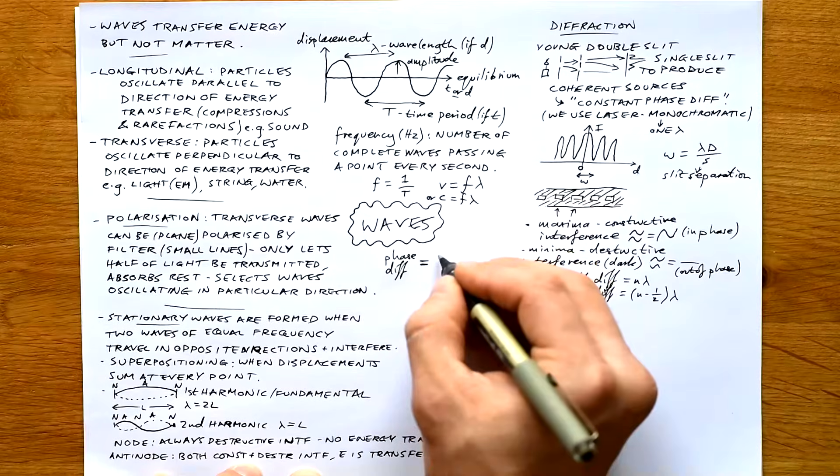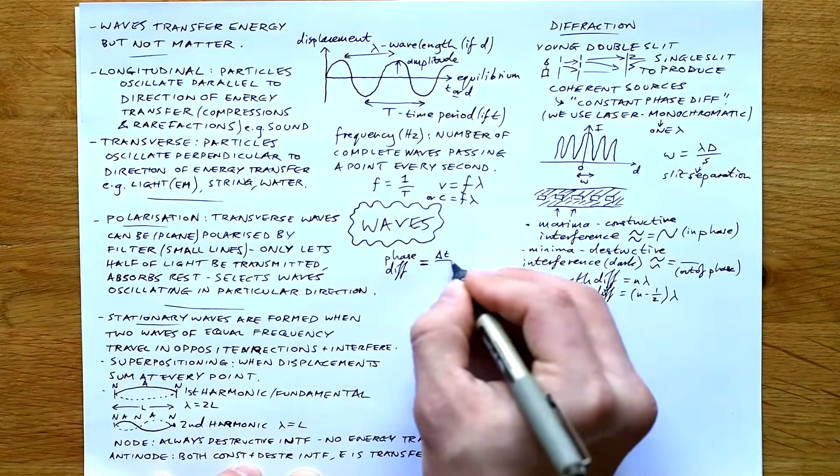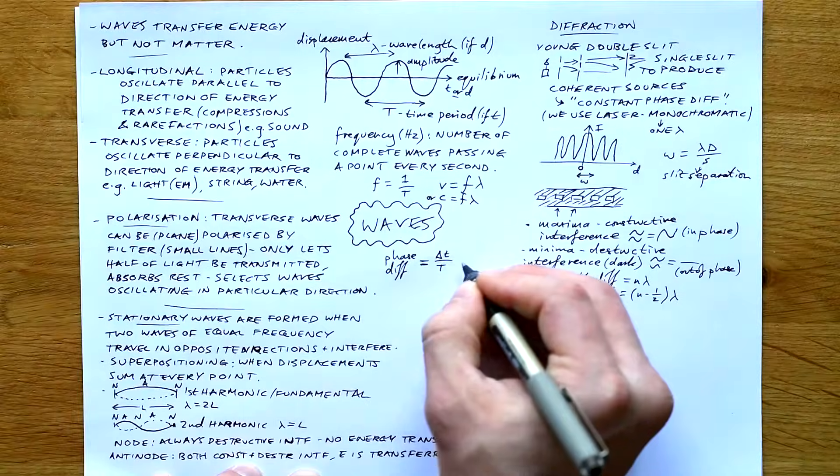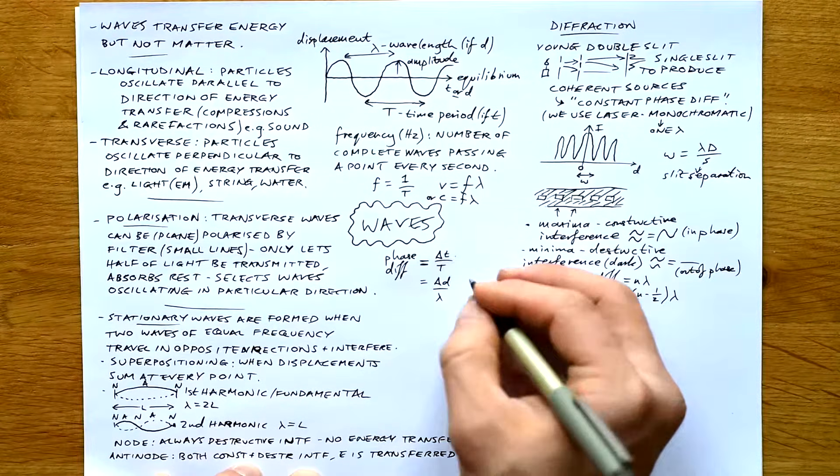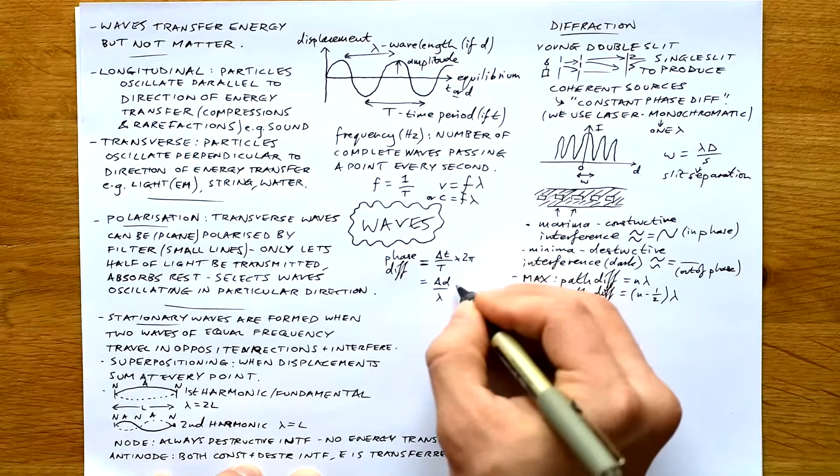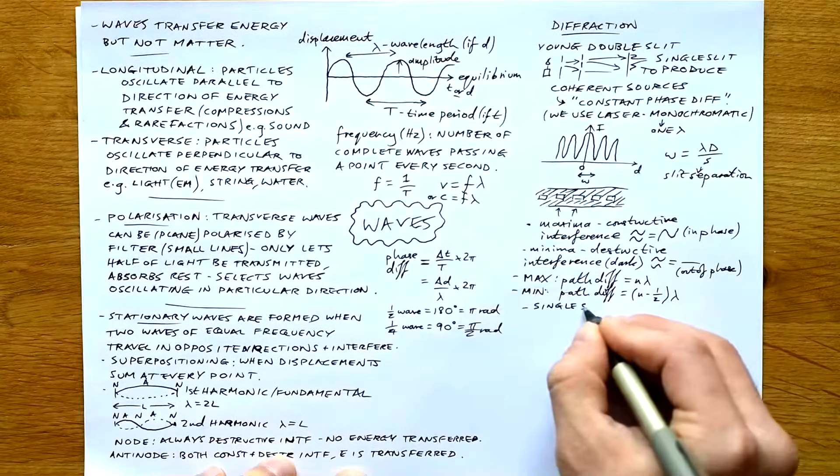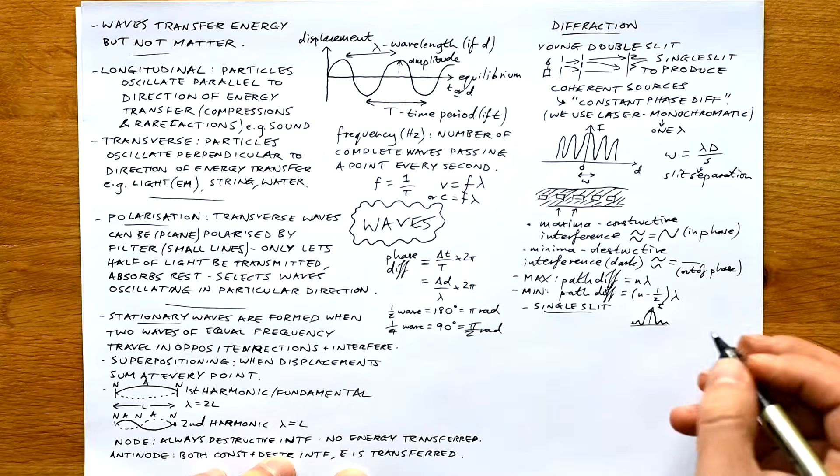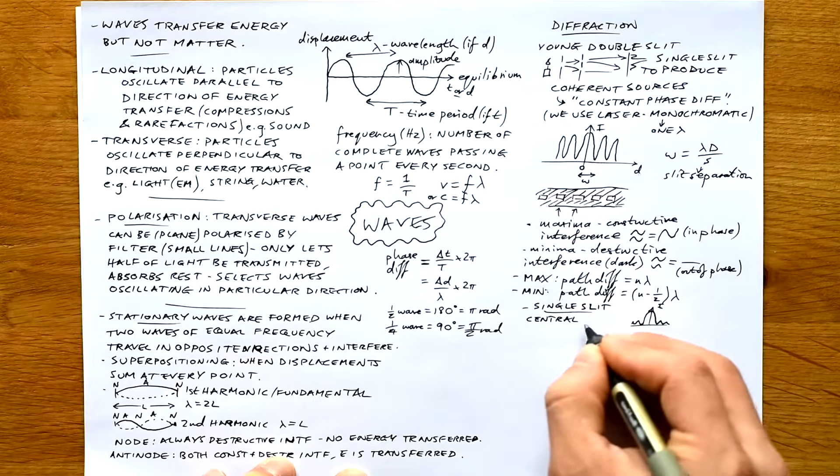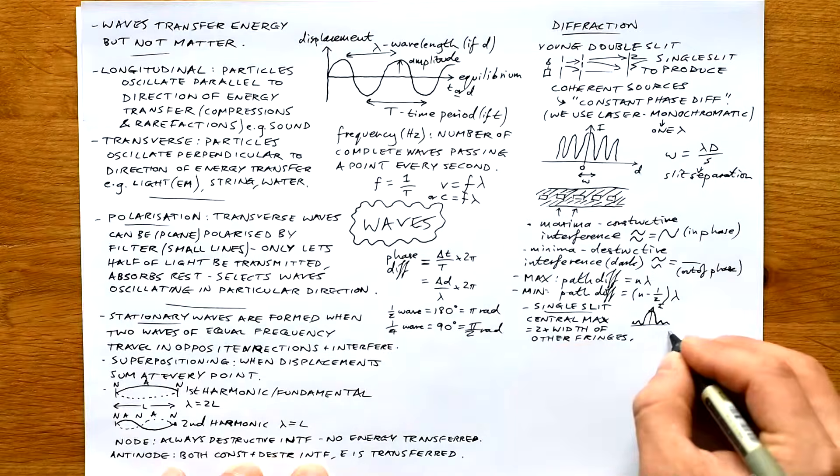Speaking of path difference and phase difference: phase difference is just how out of sync two bits on one wave or two waves are. So we take the difference in the time divided by the time period, or difference in distance divided by the whole wavelength. It's just the bit divided by the whole, times by two pi, and that turns it into radians. Single slits look like this: a big central max, falls away very quickly. The central max is twice as big as the other fringes.